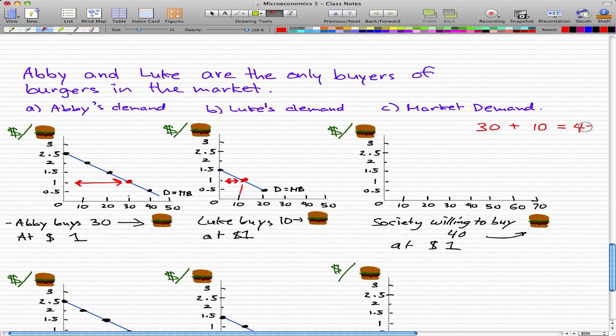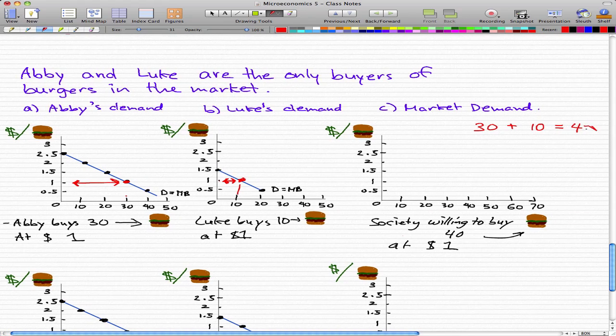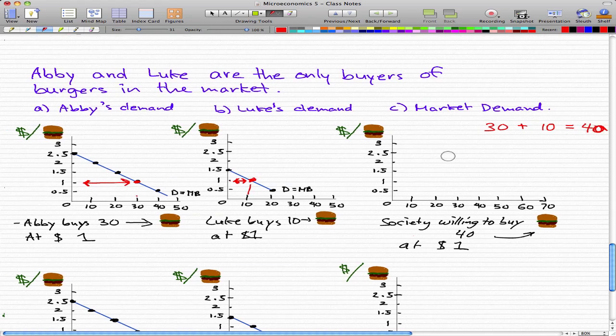And since they're the only people in the market, we can calculate that at this point, for the market, at a dollar per burger, there will be at most 40 burgers sold.